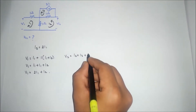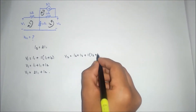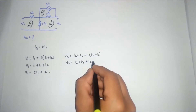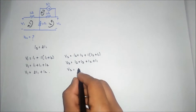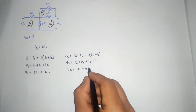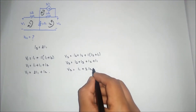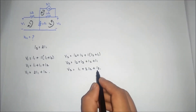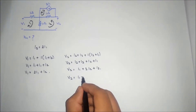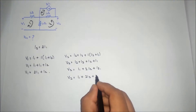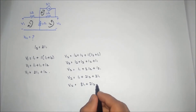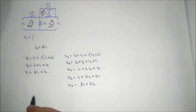Expanding loop 2: V2 is equal to I2 plus I3 plus I2 plus I1, which gives V2 equals I1 plus 2I2 plus I3. Since we know I3 equals 2I1, substituting gives V2 equals I1 plus 2I2 plus 2I1, so V2 equals 3I1 plus 2I2.